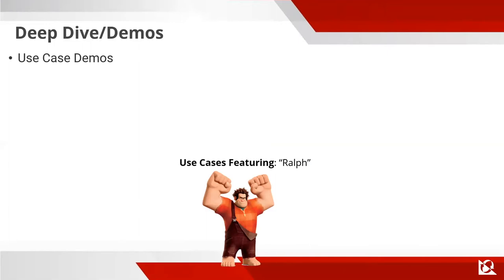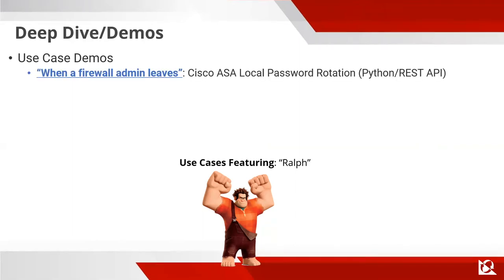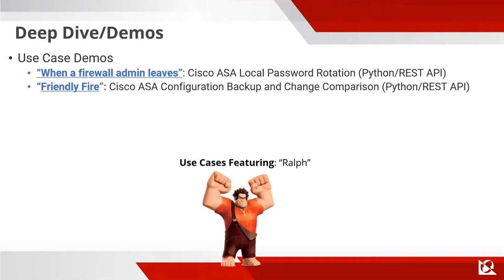I'm using Wreck-It Ralph as my feature character to make it a little more interesting since looking at source code can be a bit boring. One of the use cases we're going to talk about is when a firewall admin leaves, or audit wants password rotation — how to rotate passwords. Then we'll talk about friendly fire — how to back up your config for emergency changes that eventually break things. If you build backups into your process through automation, you can avoid that.